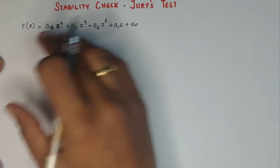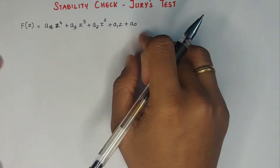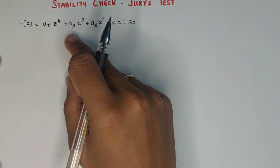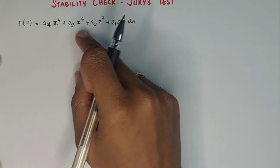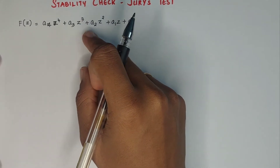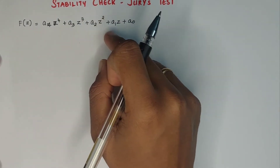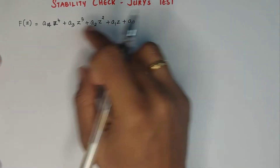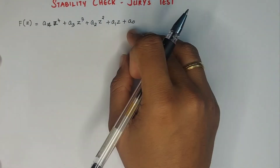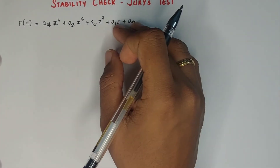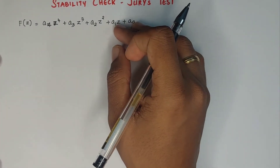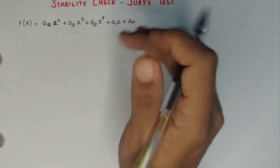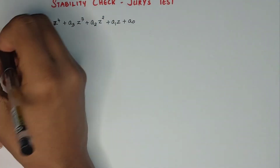This is an example system: A4·Z⁴ + A3·Z³ + A2·Z² + A1·Z + A0. Now we will check the system. In the case of Jury's test, we will satisfy two conditions: the necessary condition and the sufficient condition. These two conditions are used to check the stability of the system.